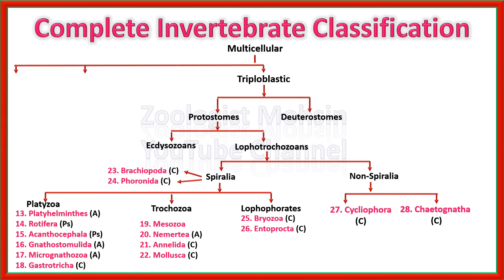By observing this complete dichotomy it becomes easier to categorize phyla into different clades. In exams, questions are usually asked such as: which phylum is not Lophotrochozoa, not Ecdysozoa, not a deuterostome, or not a protostome. So you have to remember all these categories and the specific phyla which belong to each clade.